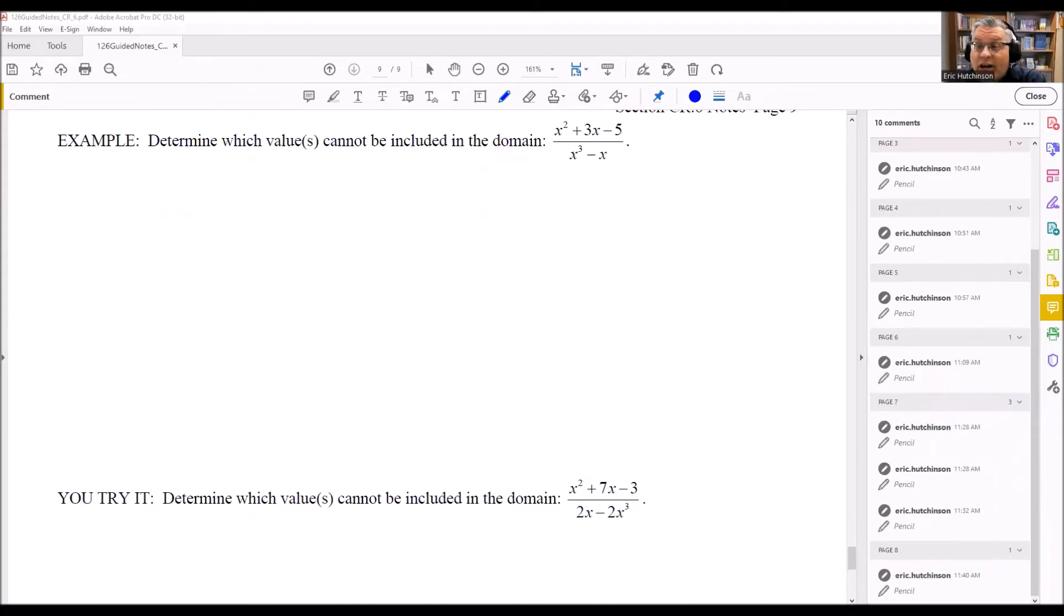These problems are asking us to find domain or find which values cannot be included in the domain. Domain is the x values that are allowed in a problem like this. If any x values cause us to have division by zero, then that cannot be included in the domain. So for rational expressions like you have here, you want to find out what numbers cannot make the bottom equal to zero. Any numbers that make the bottom equal to zero are not going to be included in the domain.